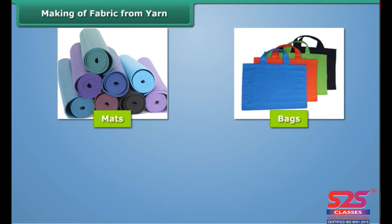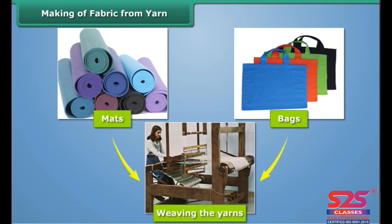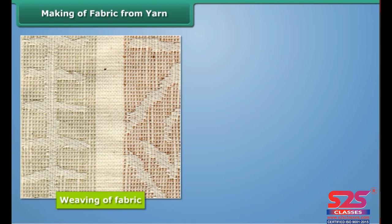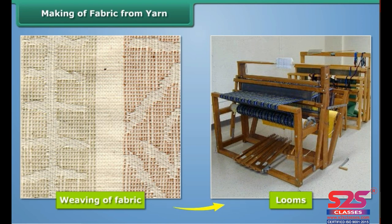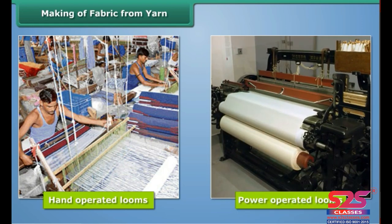Now let us know how fabric is made from yarn. Fabric is made by weaving and knitting the yarns. You can see these mats and bags — they are made by weaving yarns together. Weaving of fabric is done on looms. Looms are of two types: hand-operated looms and power-operated looms.